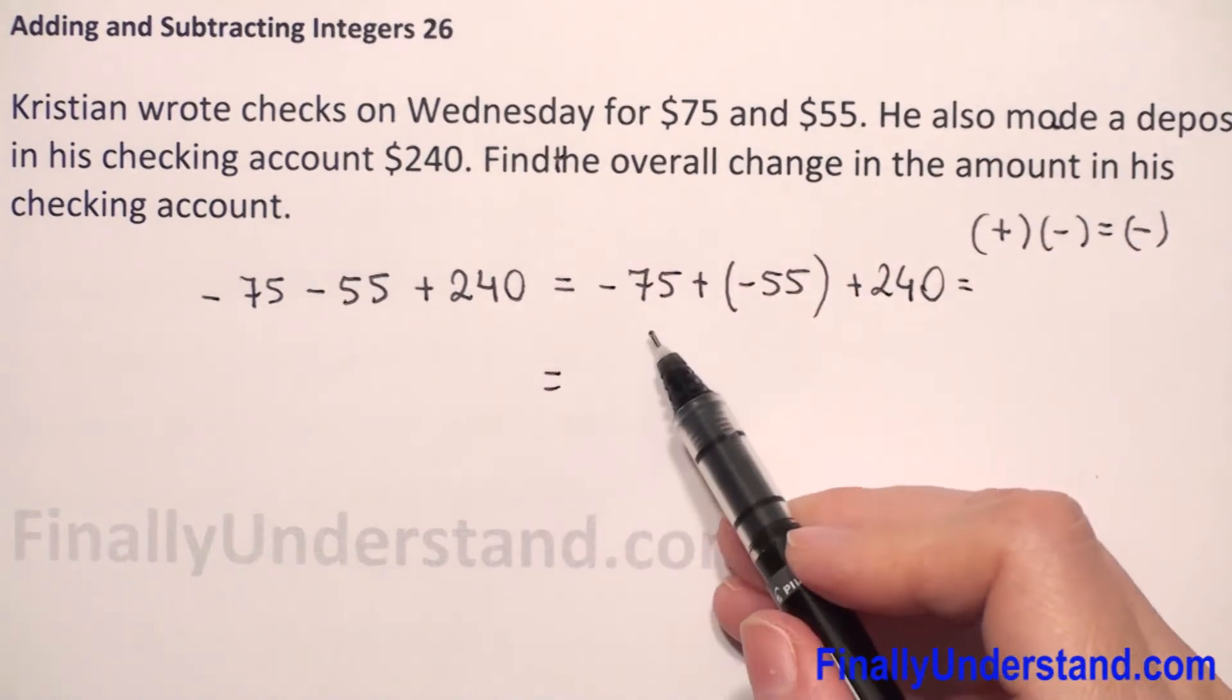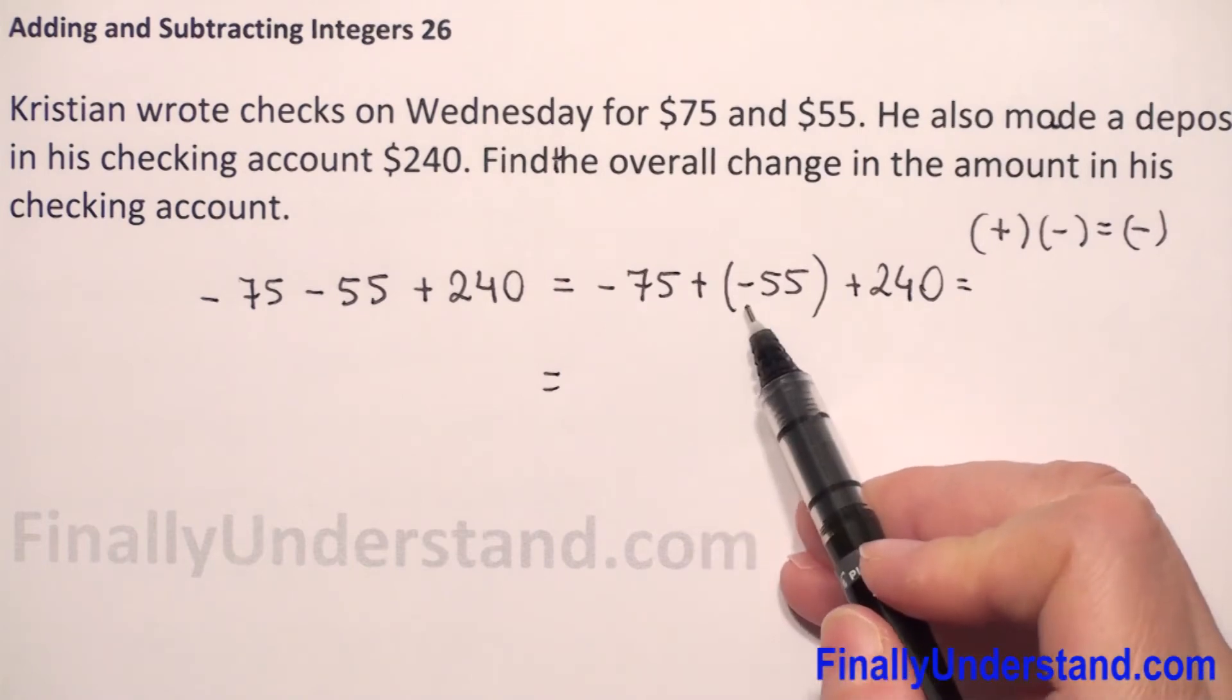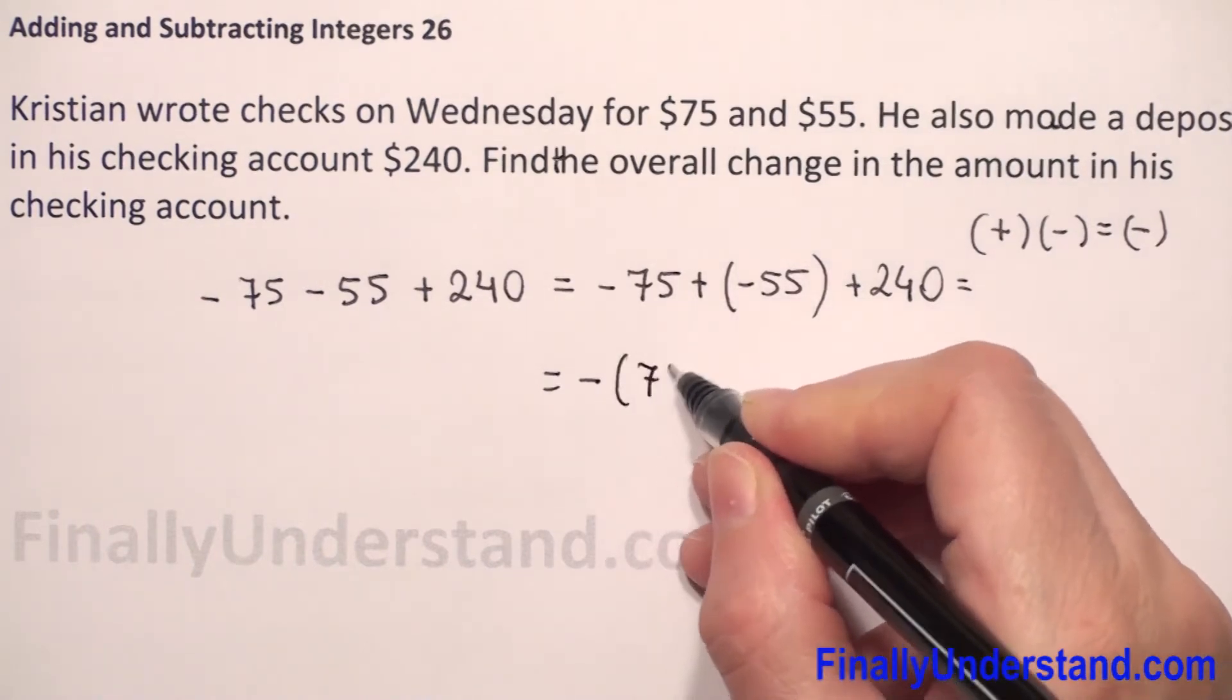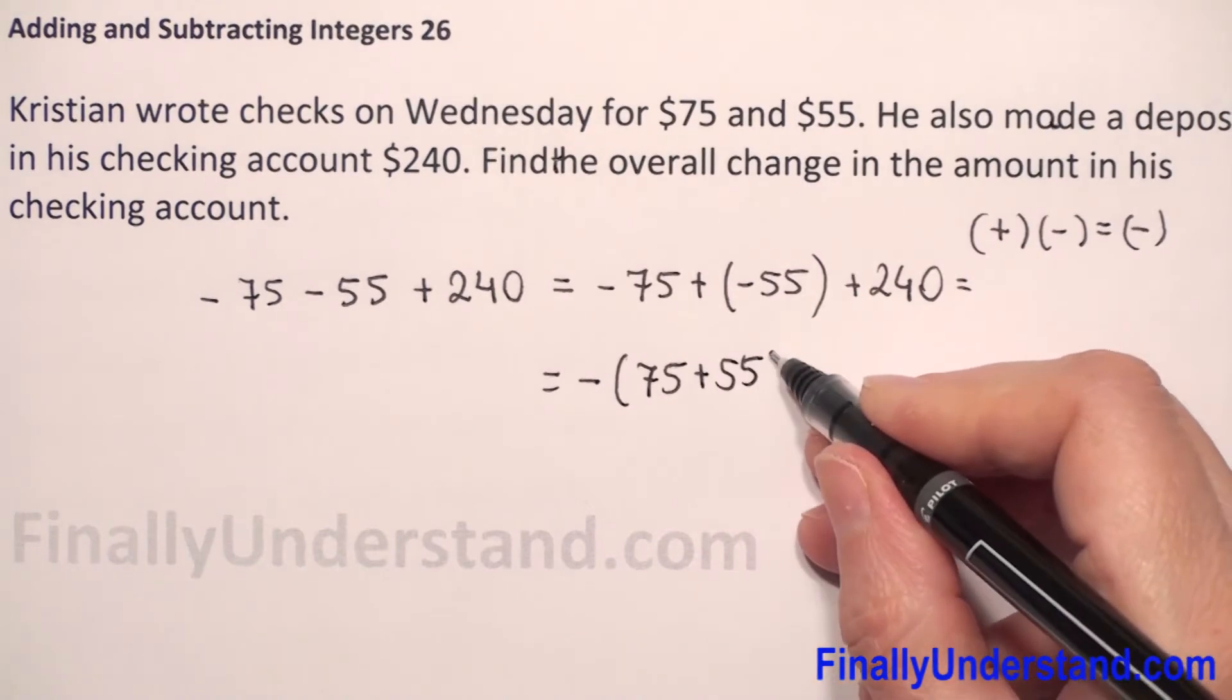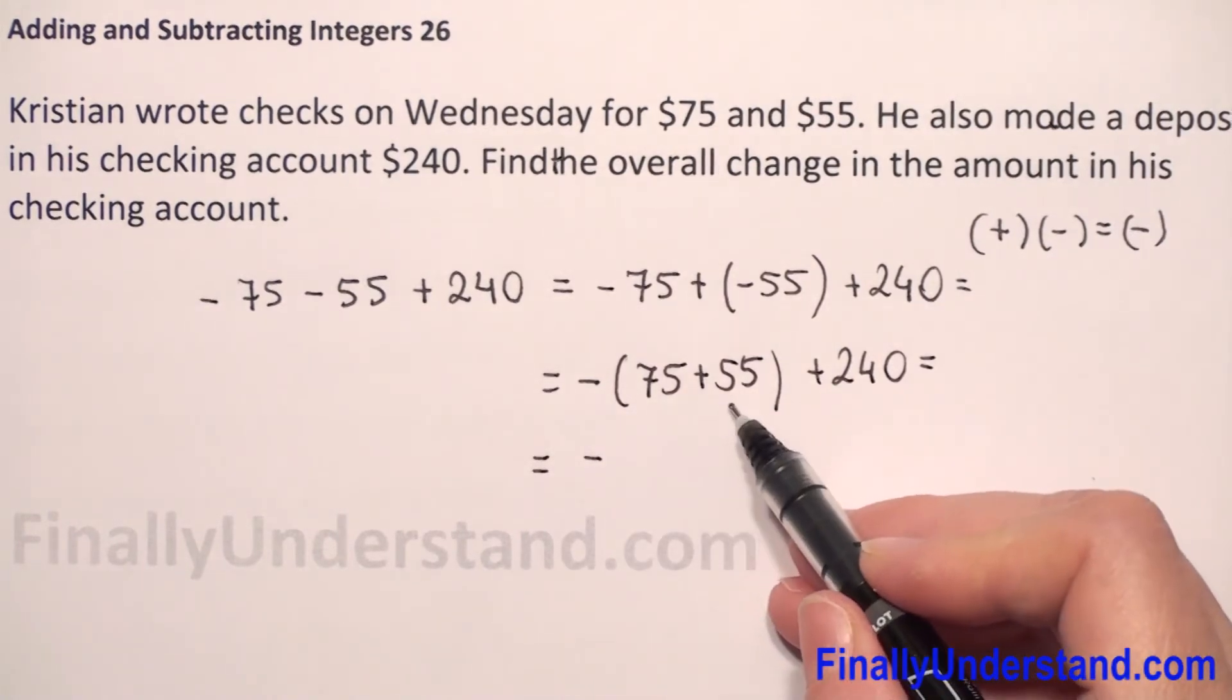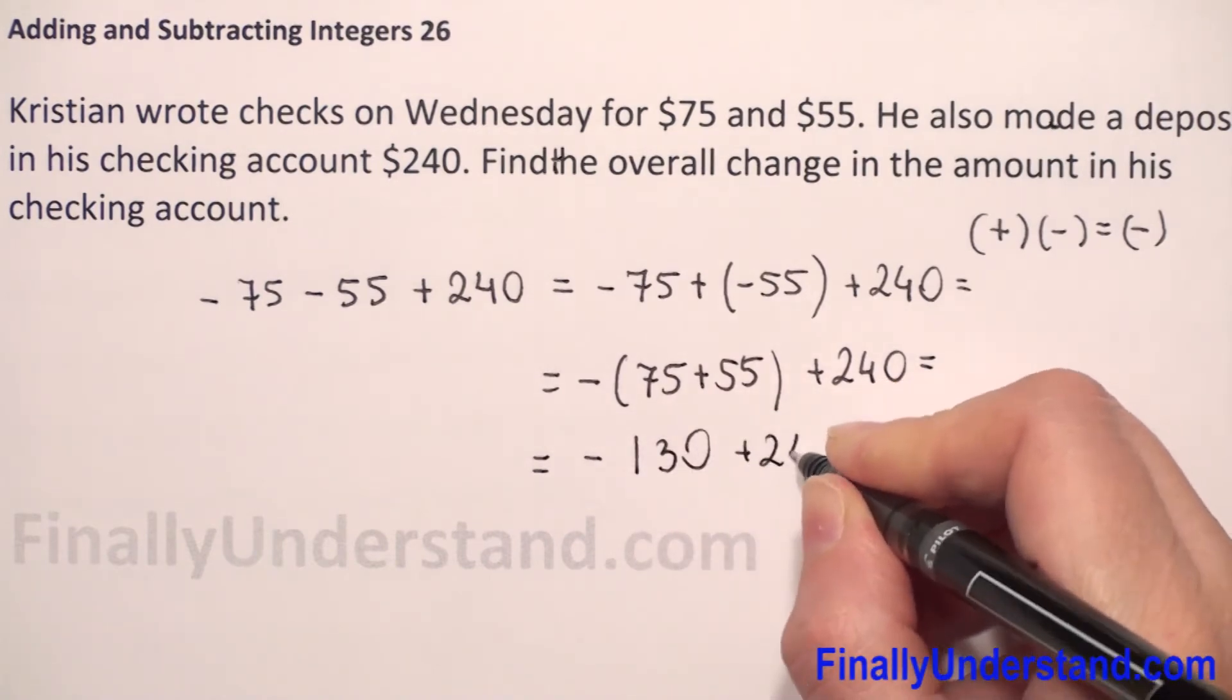When we add two integers with the same sign, in this example we have negative signs, we copy this negative sign and we just add 75 plus 55. And of course, $240 we have to rewrite. So this is equal to negative sign we rewrite, 75 plus 55, so this is $130, plus $240.